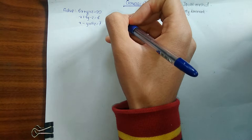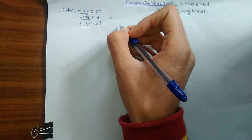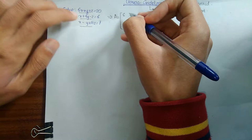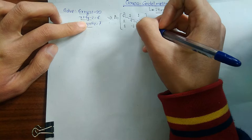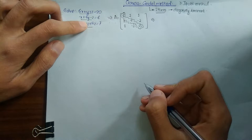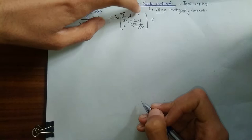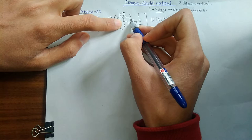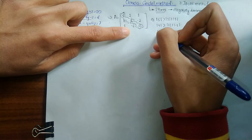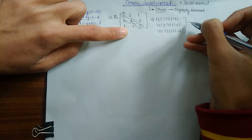To check diagonal dominance, if I write this equation in matrix form, matrix A equals: first row [6, 1, 1], second row [1, 4, -1], third row [1, -1, 5]. The main diagonal elements are 6, 4, and 5. For diagonal dominance, each main diagonal element must be greater than the sum of the remaining elements in that row. So |6| > |1| + |1|, |4| > |1| + |-1|, and |5| > |1| + |-1| — all three conditions are satisfied.